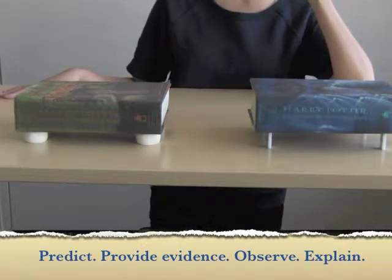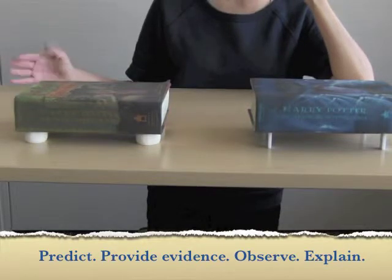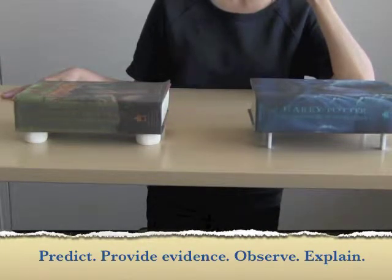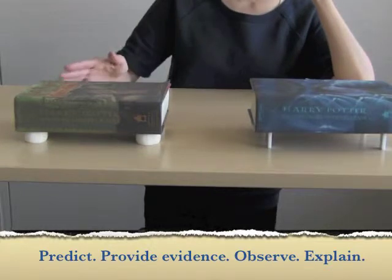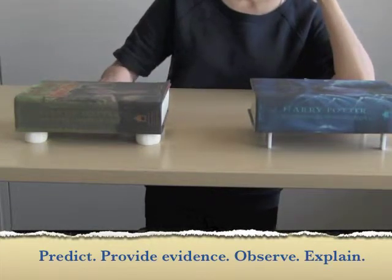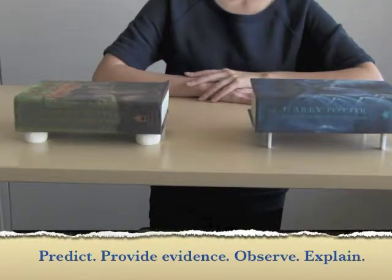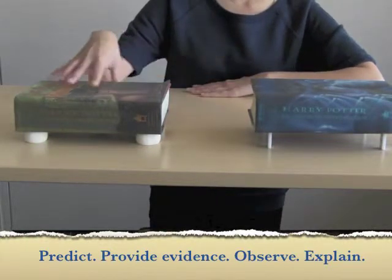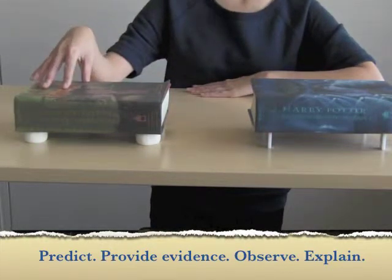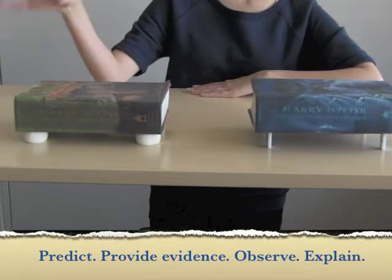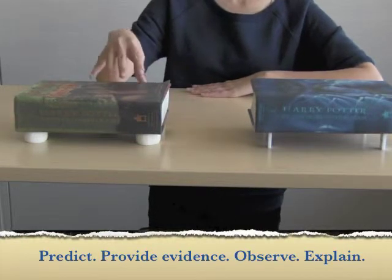What do you think is going to happen with the marshmallows once I shake the table? I think they're going to fall over, taking the book with them. Why? Because they're soft and light and they won't withstand an earthquake. So she's describing the properties — soft and light — and saying they're not going to withstand the shaking, bringing that back to support her prediction.